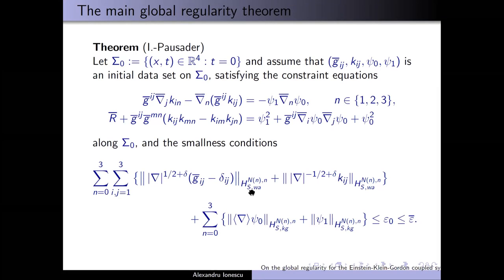The smallness is captured as follows: the metric g-bar is close to the flat metric delta_ij. The H^N_S spaces are Sobolev spaces with weights — N equals three means we put up to x-cubed weights. The rule is that for the wave operator, we apply x dx, while for the Klein-Gordon we can also apply just x, or x squared, up to x cubed, with or without derivatives. These are weighted spaces with up to three powers of x.